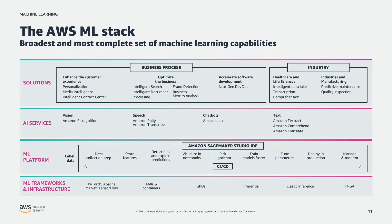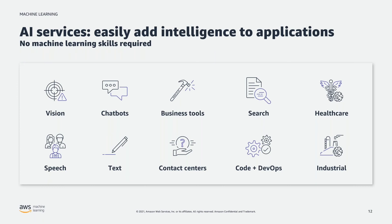We also have industrial solutions — IoT solutions that do anomaly detection on IoT feeds coming from equipment to detect if a pump, engine, or turbine is not performing correctly, enabling predictive maintenance. We also have pre-built computer vision quality inspection services. We strongly encourage you to use those top-layer services if you can. If you can't, use SageMaker to build the services below that. The value of the AI services is that no machine learning is required — any developer can use them with a simple API call, and they are managed hosted services that automatically scale.